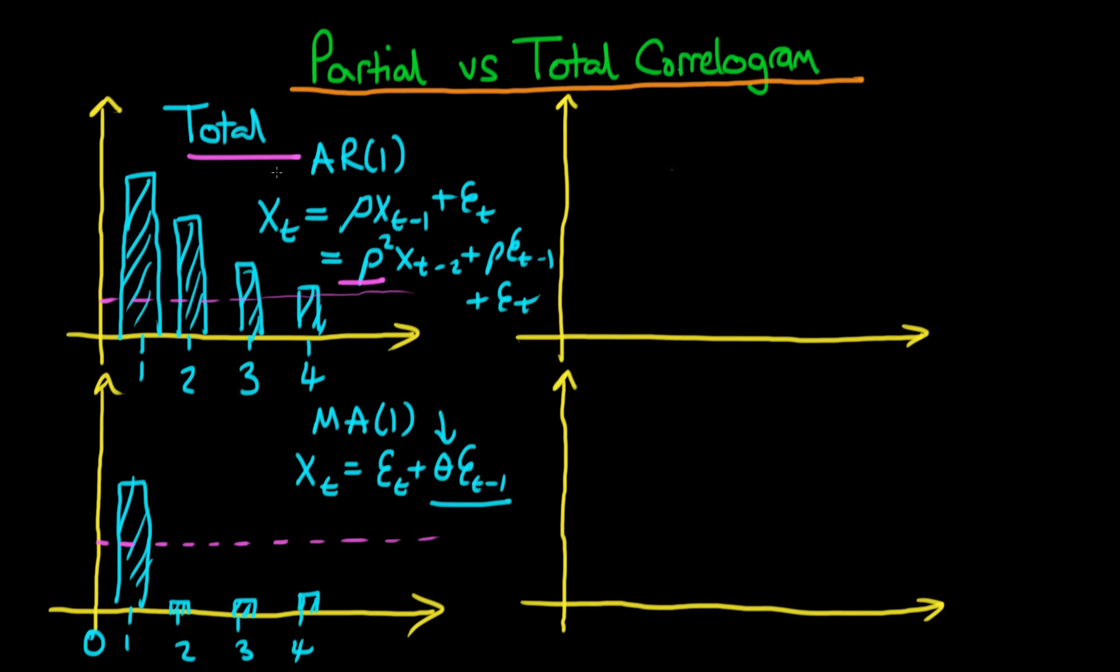So total correlograms are a way of diagnosing whether you have an AR1 or an MA1 process. But how do you determine what sort of order of AR process you have? Because in principle an AR2 process will not look that dissimilar to an AR1 process in terms of its total correlogram.